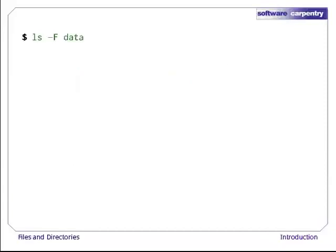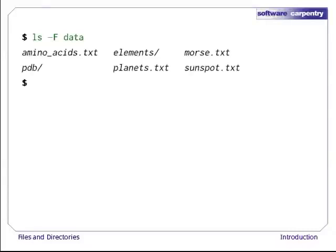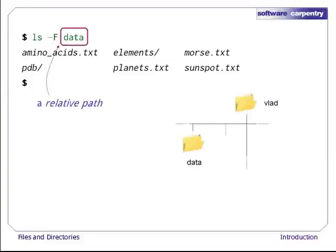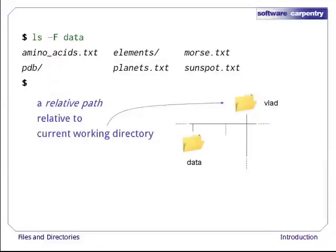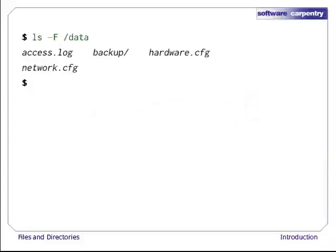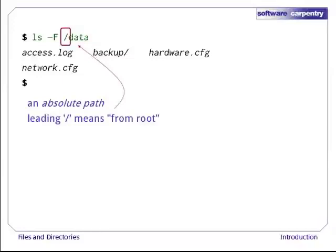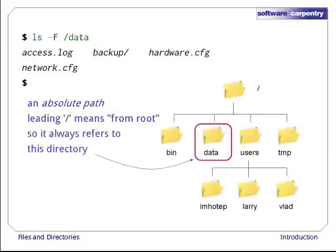Now let's run the command ls -f data, which tells ls to give us a listing of what's in our data directory. The output shows us that there are four text files and two directories. This hierarchical organization helps us keep our work organized. Notice how we spelled the directory name data — since it doesn't begin with a slash, it's a relative path, i.e., it's interpreted relative to the current working directory.